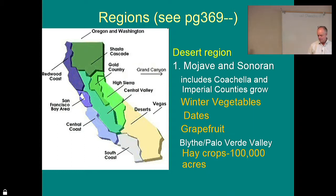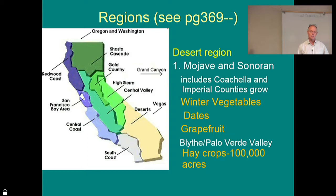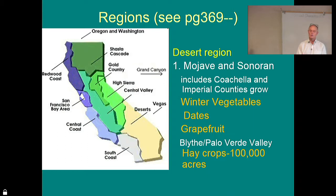We can grow a lot of alfalfa very efficiently, but in this very dry area we have to get water to it artificially through aqueducts, or pump it out of the groundwater basin as we do in Newbury Springs. We have to make sure we conserve that supply — we can't overdraft or over-pump those groundwater basins. We'll be looking at that under our water management section.